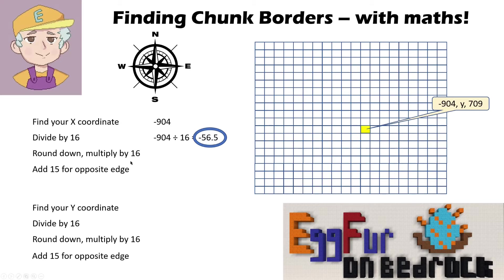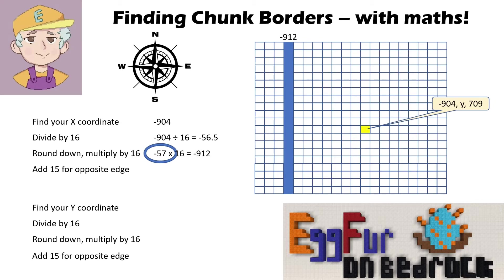I take that minus 56.5 and I'm going to round it down. Because it's a negative number — this is really important, don't get this wrong — when you round it down, that minus 56 will become minus 57. You don't just drop the decimal; with a negative number you've got to actually round it down to minus 57. So we take that minus 57, multiply it by 16, and we get minus 912. That is our first chunk border.